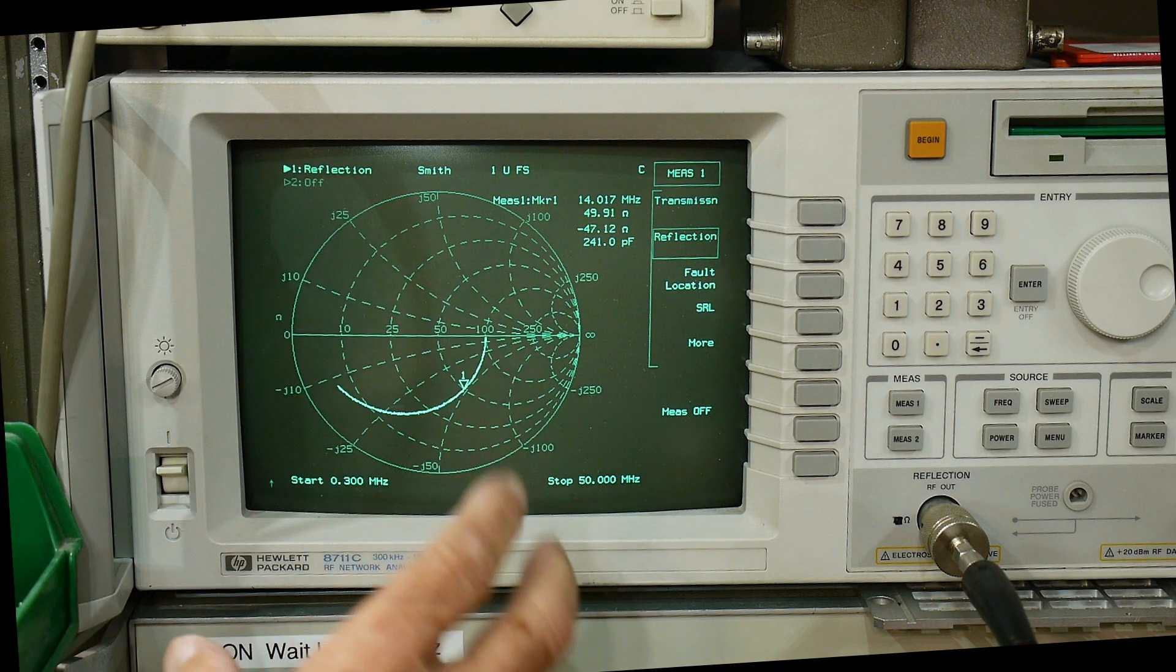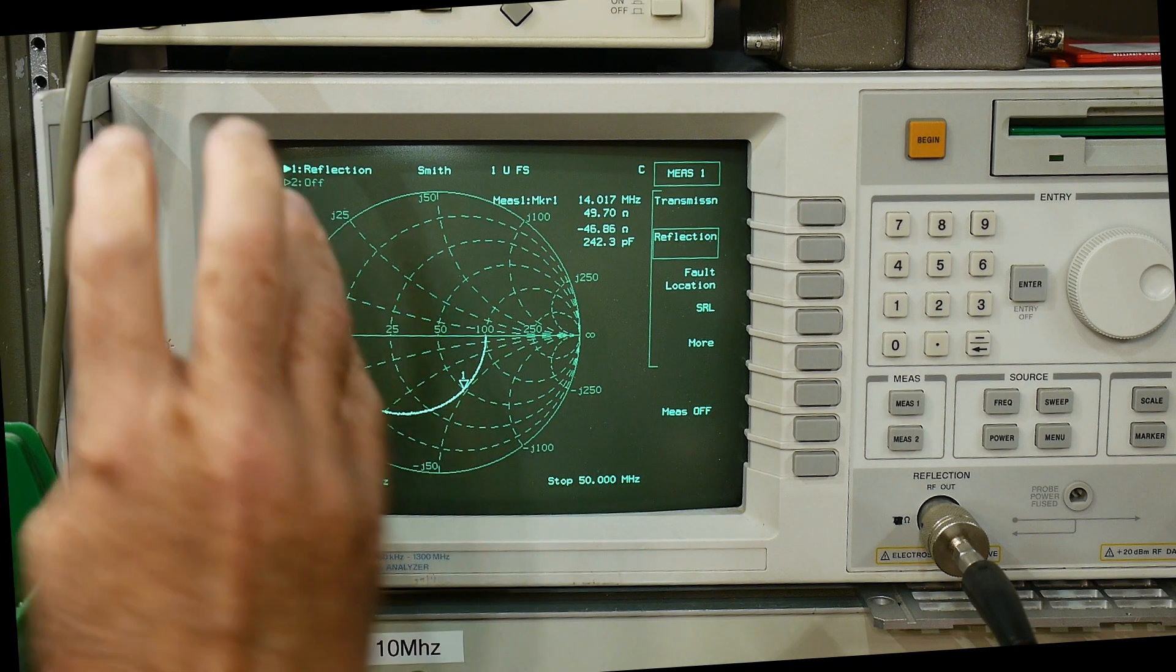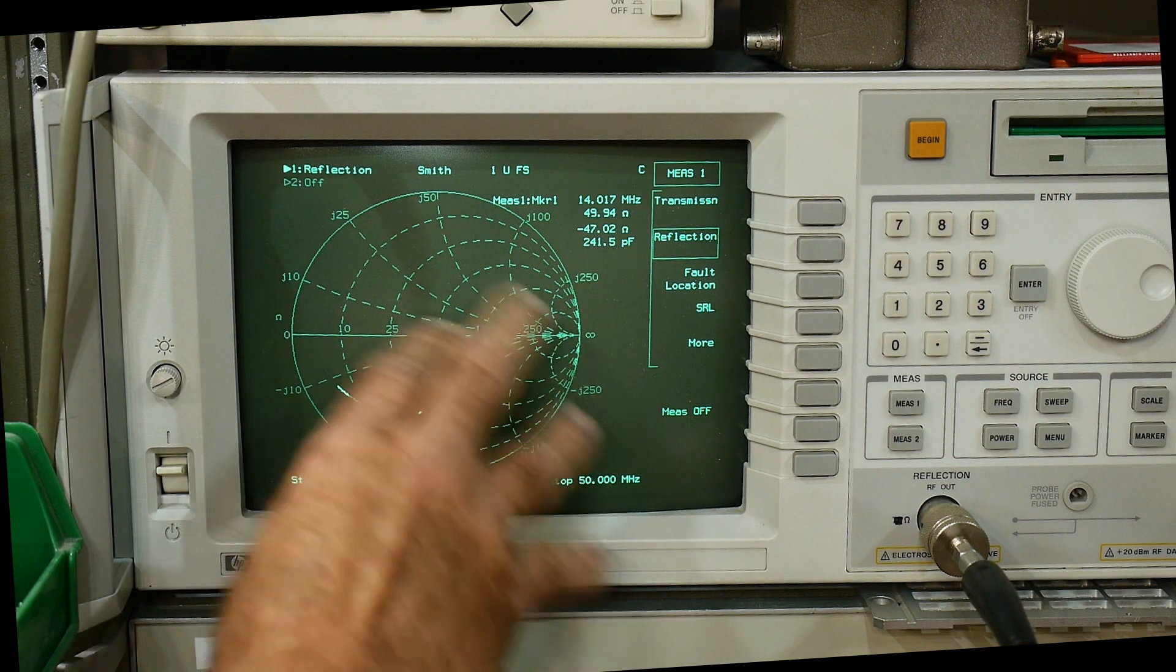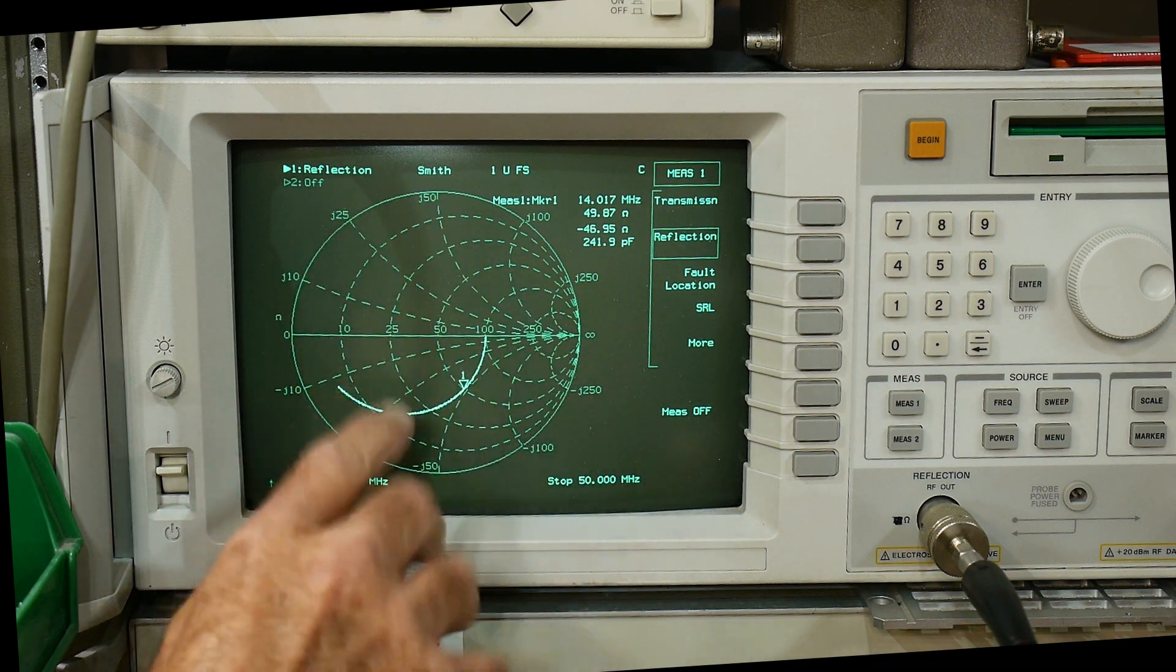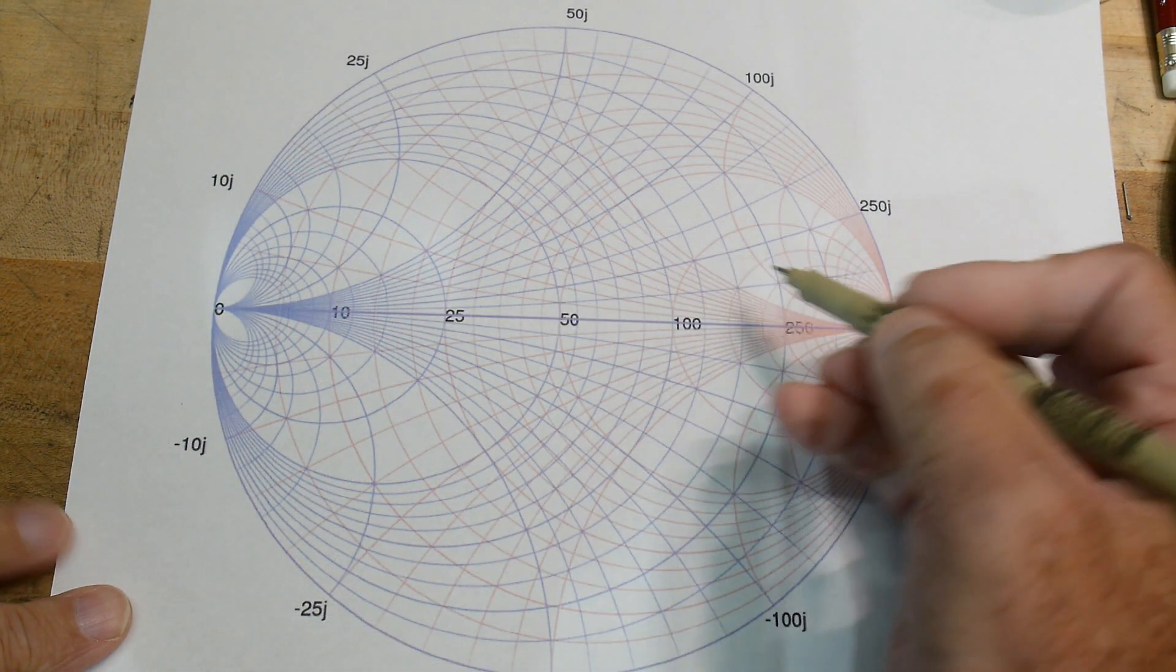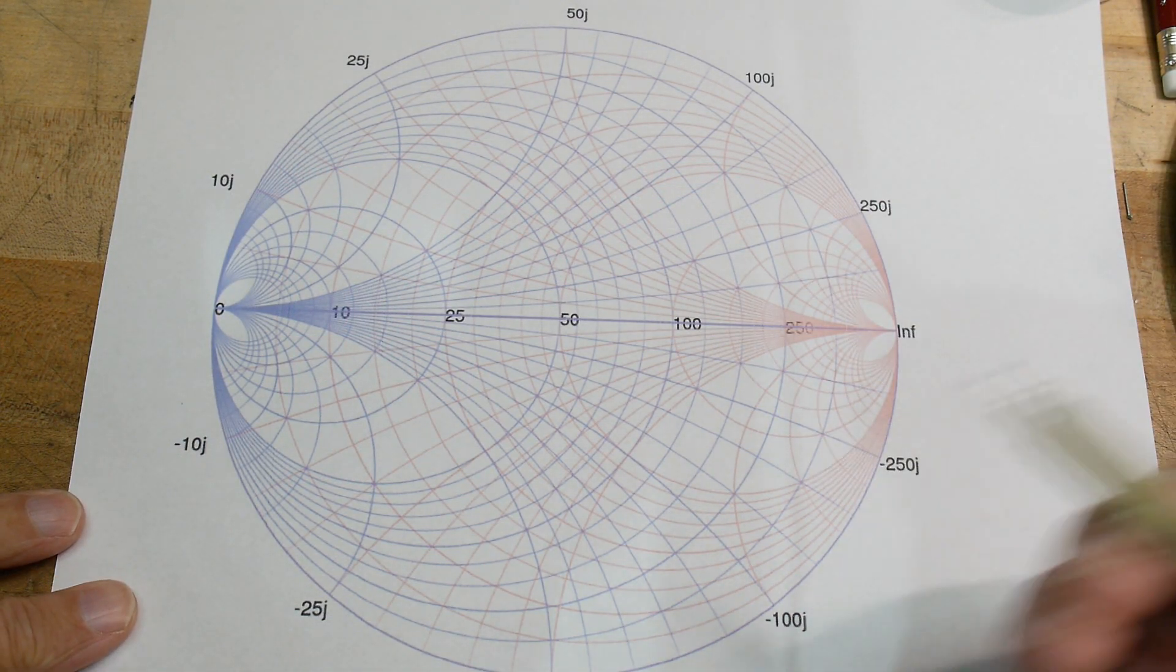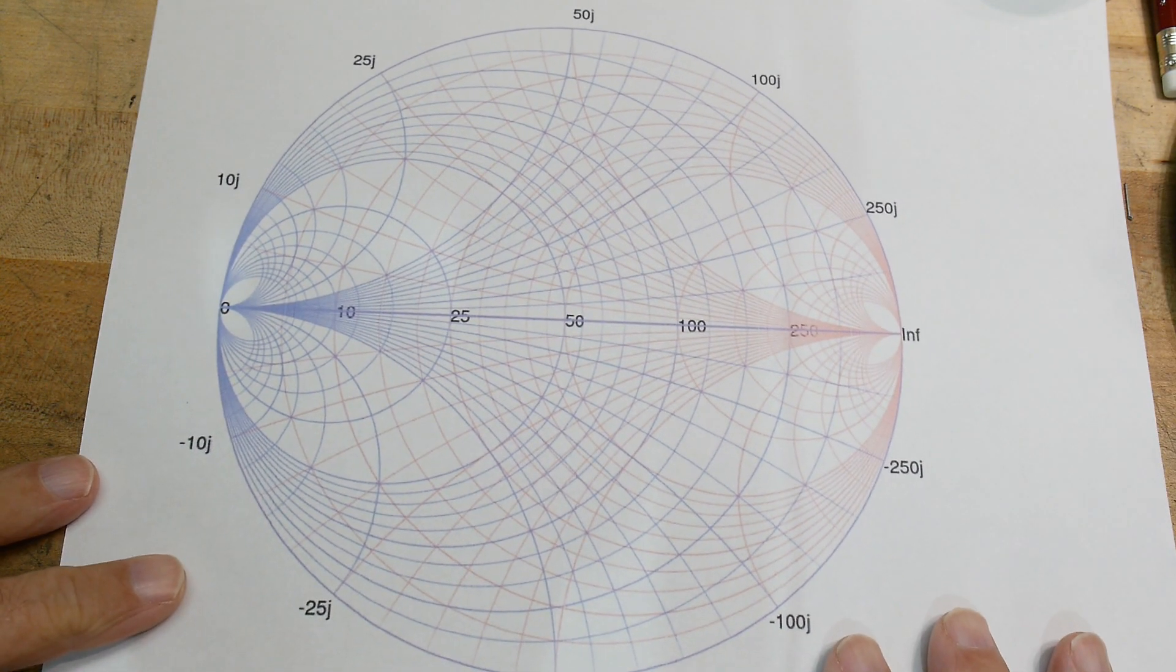Let's go back over to the paper. Now one of the things I don't like about VNAs is they only have one set of curves. They only have this set of curves, but remember when I showed you many times the actual Smith chart has a set of red curves and there's a set of blue curves.